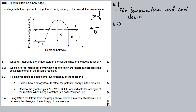The reverse reaction is exothermic. The activation energy is the distance — or the potential energy — measured from the reactants all the way up to the peak of your graph. For the forward reaction, we can identify the activation energy using the labeled letters.